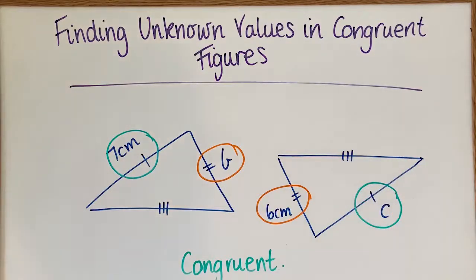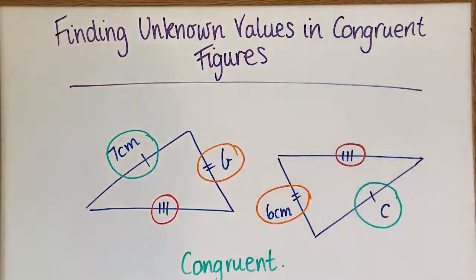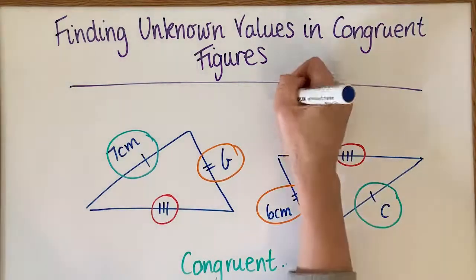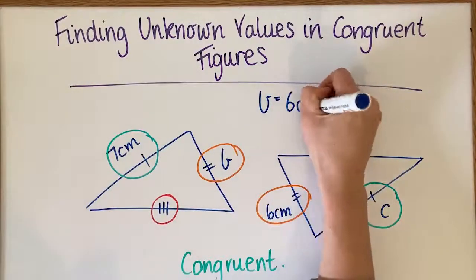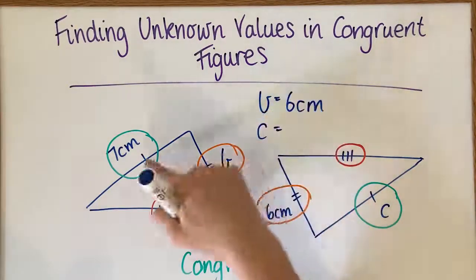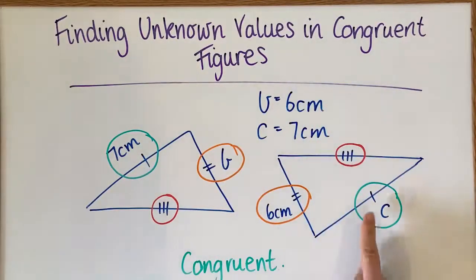And then also I know that these match, but there's no values or pronumerals there. So that side probably isn't very important to us. But what we can say is that B is going to be equal to six centimetres and that C is going to be equal to seven centimetres because of the line markings. And we know that they're congruent.